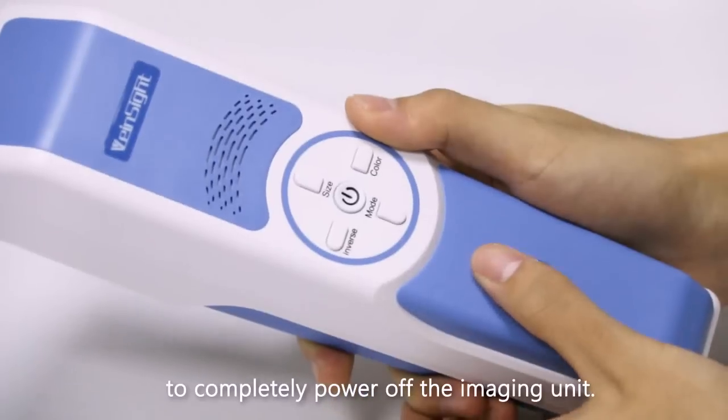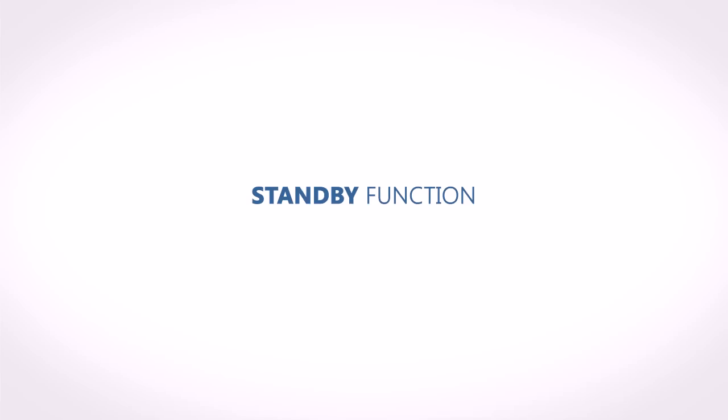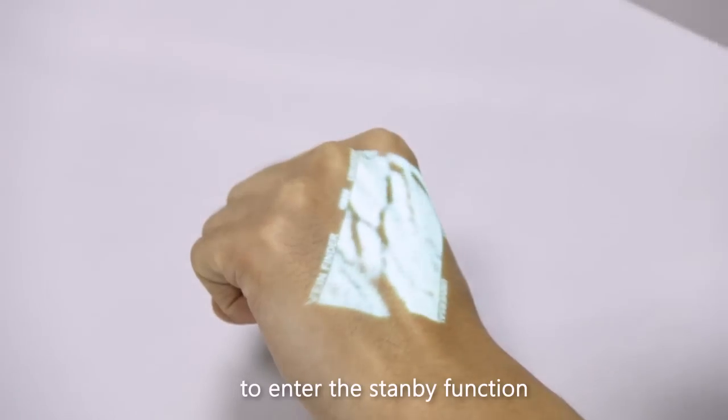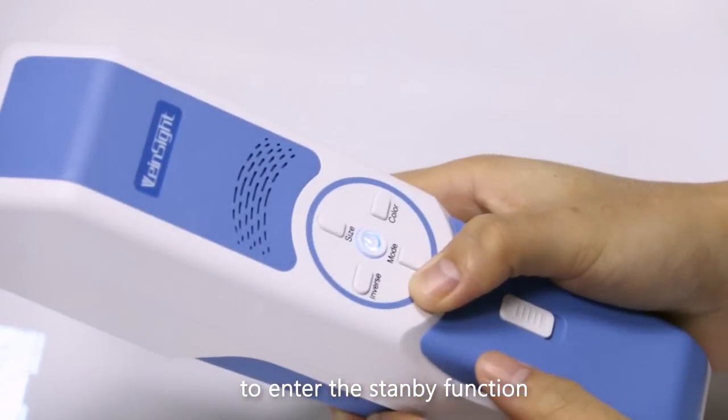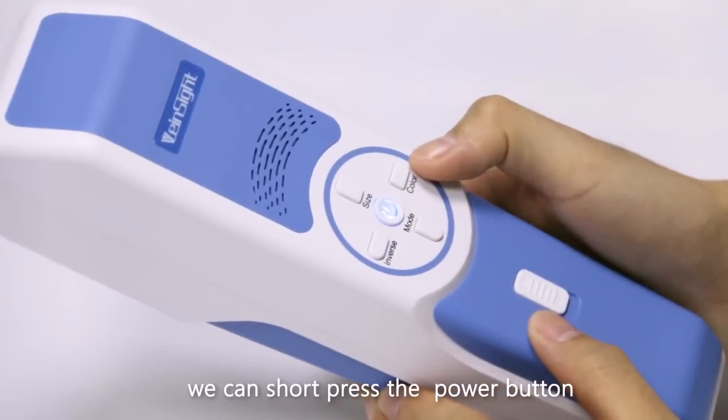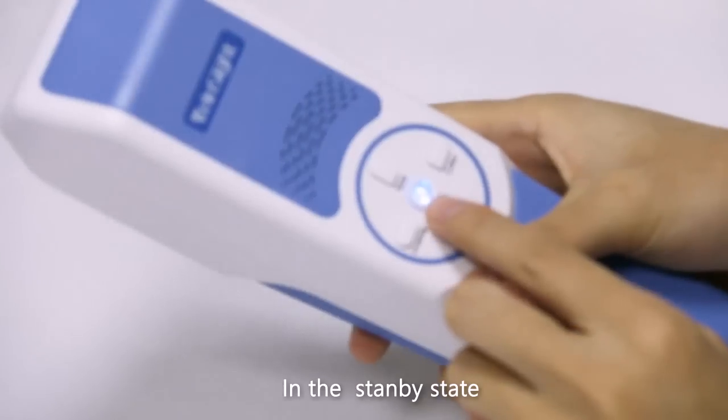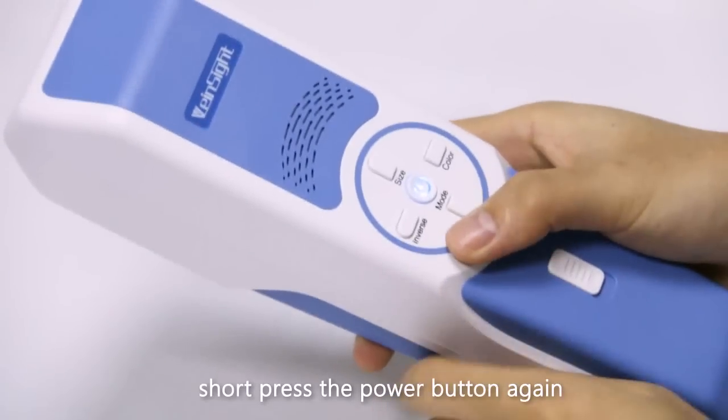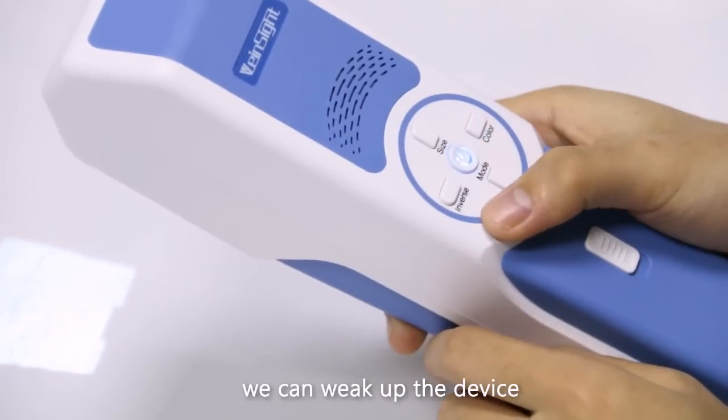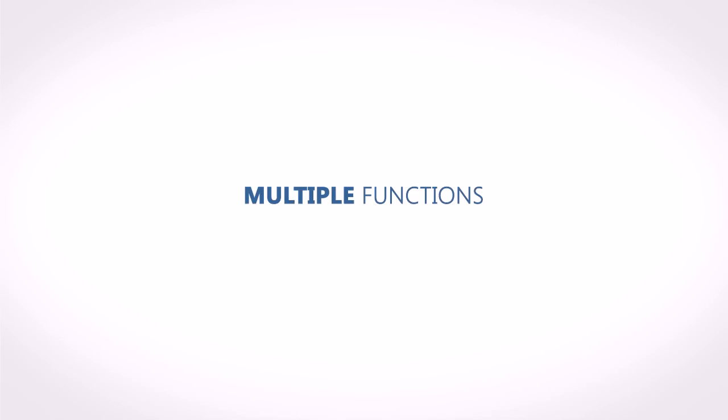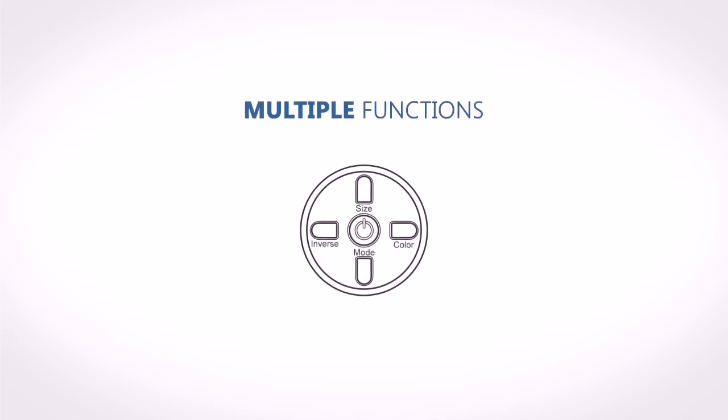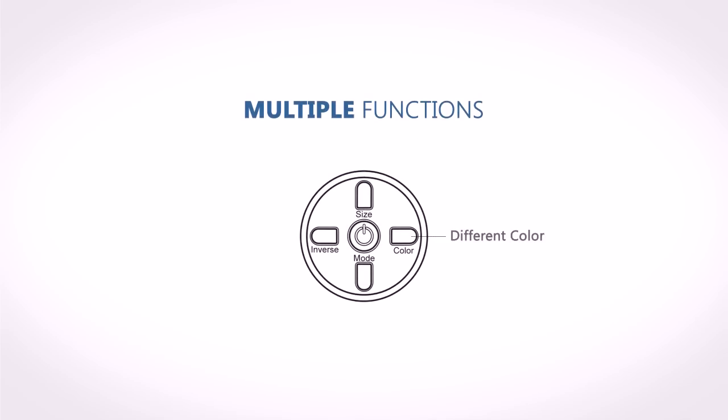VS 400 has a standby function. To enter standby, short press the power button when the machine is powered on. In the standby state, short press the power button again to wake up the device.